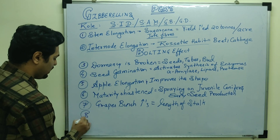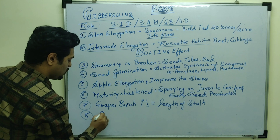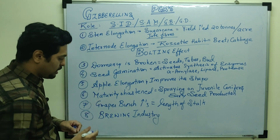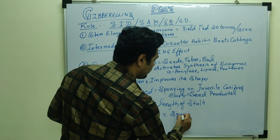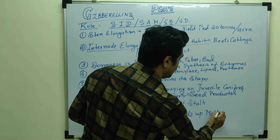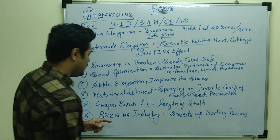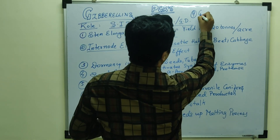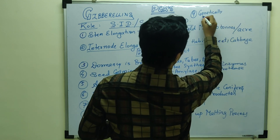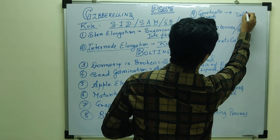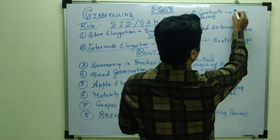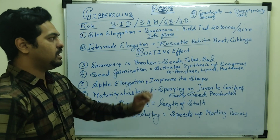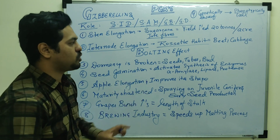Gibberellins are also used in the brewing industry — in the process of making beer and wine — because they speed up the malting process. Apart from that, another role is that genetically dwarf plants can be converted into tall plants. However, this dwarf-to-tall conversion is from a phenotypic point of view only — externally they appear tall, but genotypically they remain dwarf plants, with no modification in the genes.